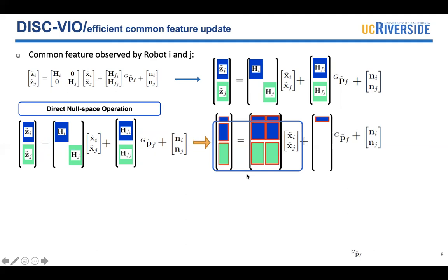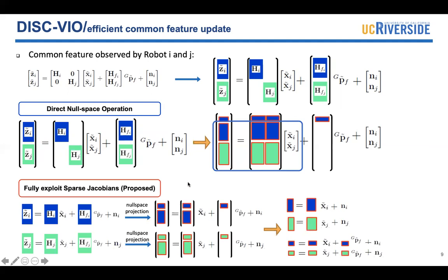However, since the common feature can be observed across many frames, this measurement vector can be a very large vector. To be more efficient, we fully explore the sparsity of Jacobians. We first perform null-space projection on robot I and robot J separately. After that, we have four subsystems and we only need the systems that are in the red boxes.